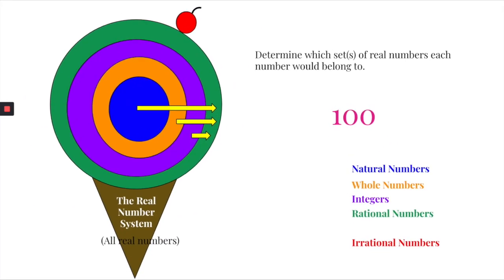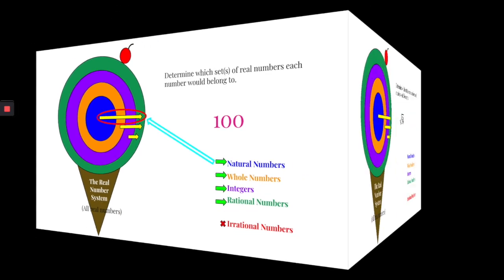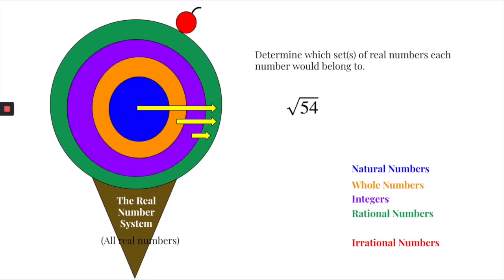Our next example is one hundred. It might take a moment, but technically it is a counting number, therefore it's a natural number. Since it falls under the natural number category, it also fits into every other category in our ice cream section: whole number, integer, rational number. And since it's rational, it's automatically not irrational.